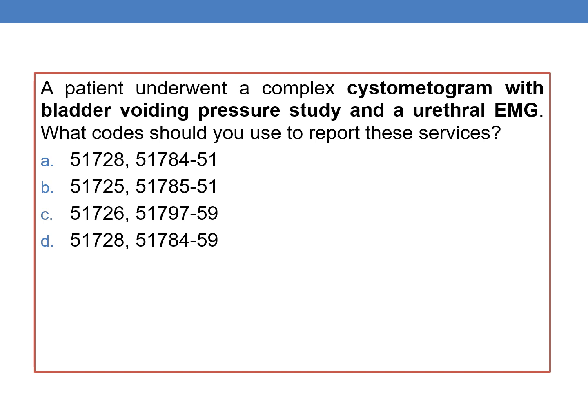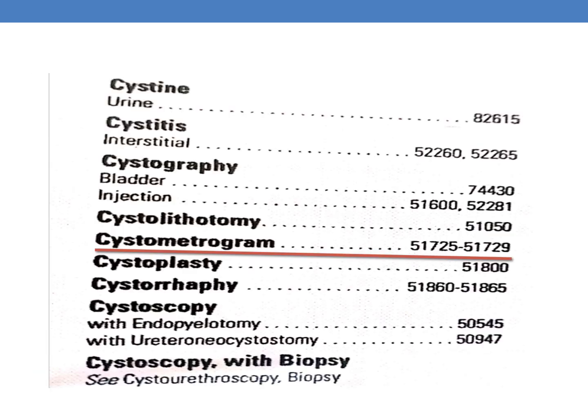The standard method for finding a code is: first, you need to locate the key terms in the question. Here, the patient underwent a complex cystometrogram. So first, you need to go to the CPT index and find 'cystometrogram.' Under cystometrogram, you can find a code range 51725–51729.